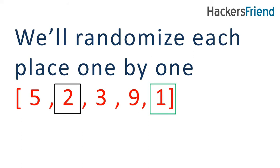We will start randomizing from place one. So we will take the element from place one, that is the last place or the n minus one place, and we will swap it with any random element from this array.